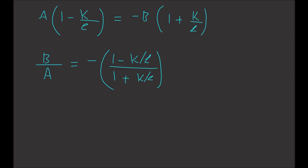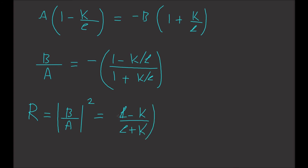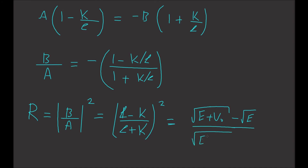Putting this back into the reflection coefficient, R equals the modulus squared of B over A, which equals (L minus K) over (L plus K), all squared. Substituting L and K in terms of E and V0, we get the square root of (E plus V0) minus square root of E, divided by the square root of (E plus V0) plus square root of E, all squared.